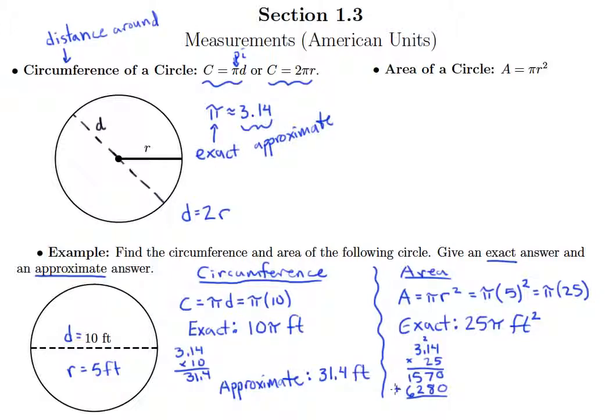Let's see, we get 15.70 as a first line, 6,280 as a second line. And of course we put our decimal point right here, two places over.